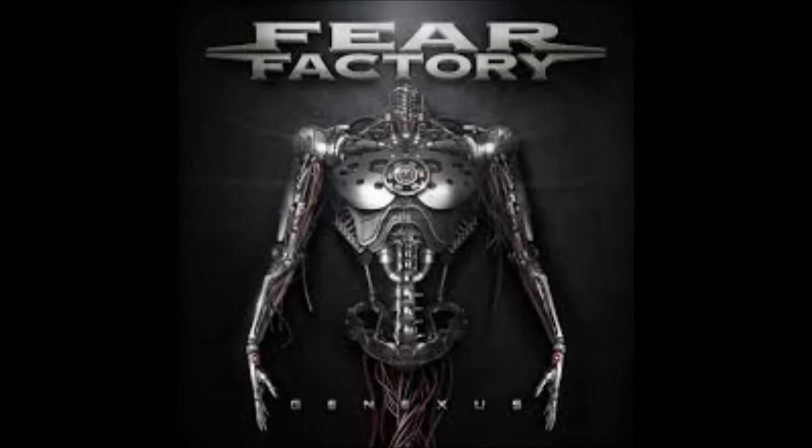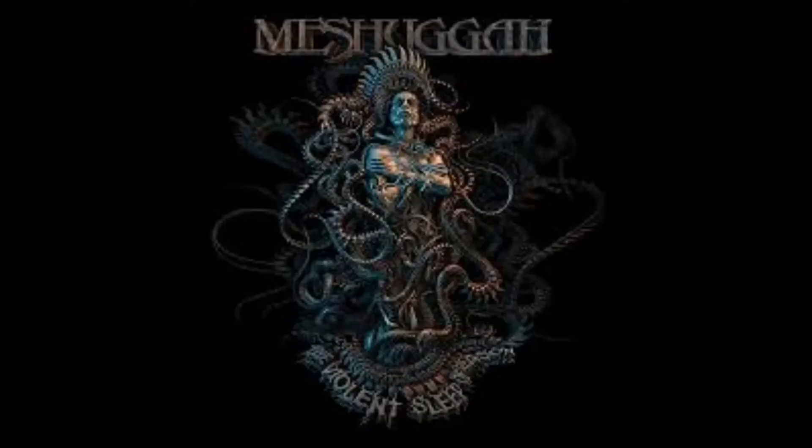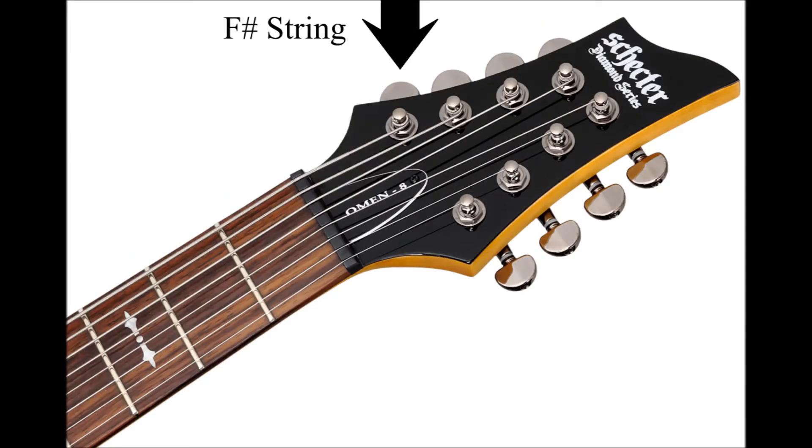Bands like Korn and Fear Factory favor these. And most of the djent bands like After the Burial, Sleeping Giants and Meshuggah prefer an 8th string tuned to F sharp standard.